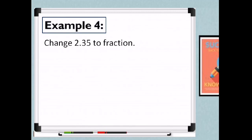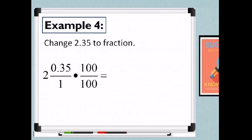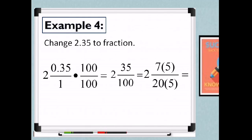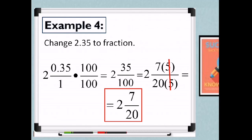Let's have our last example. Change 2.35 to a fraction. We set aside the whole number 2. So our decimal is 0.35, which is in hundredths. We multiply by 100 over 100, and copy the whole number 2. Then 0.35 times 100 gives us 35 over 100. Now we find the greatest common factor of 35 and 100 to get the lowest term, and that is 5. So we have 7 times 5 over 20 times 5. Canceling the GCF of 5, our final answer is 2 and 7 over 20. So 2.35 converted into fraction is 2 and 7 over 20.